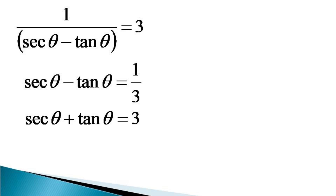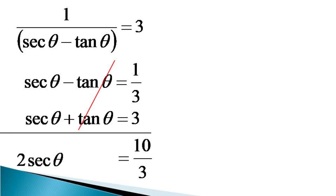Writing the original condition sec θ plus tan θ equal to 3 and adding both equations, the tan θ term gets cancelled out from the left hand side, and we are left with 2 sec θ equal to 10 by 3.